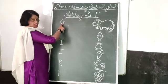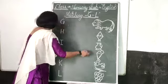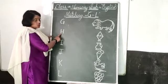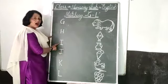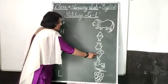This letter G, G for grapes. This letter H, H for hen. This letter I, I for ice cream.